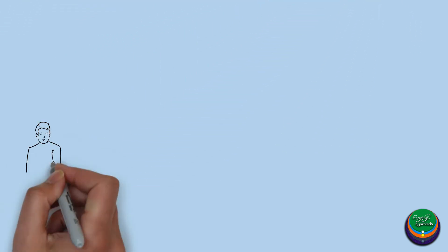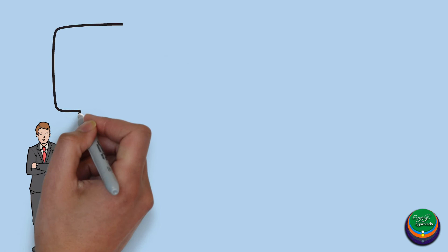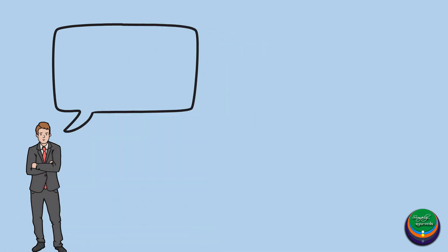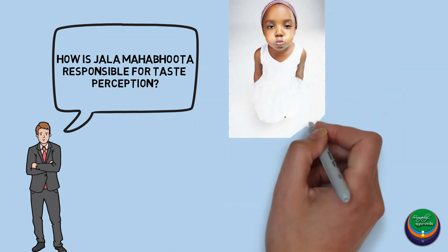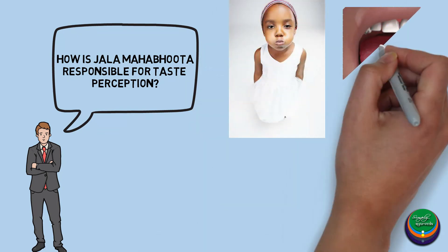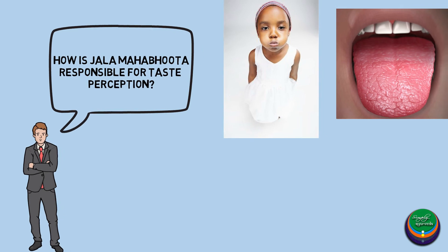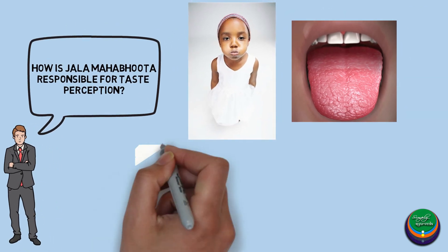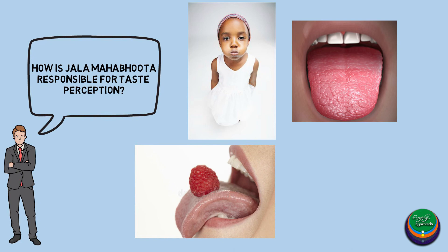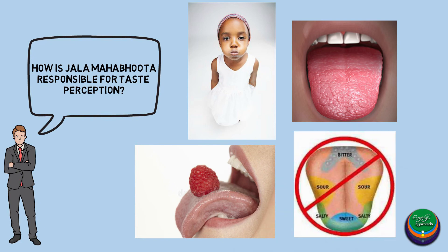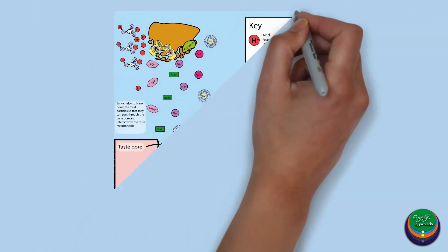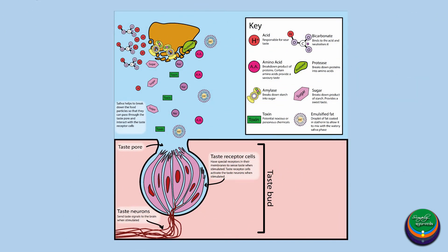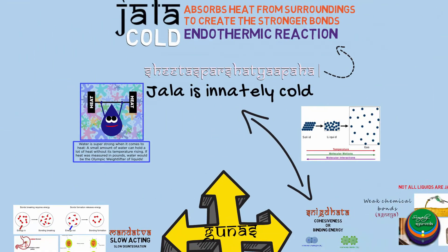Jala bhūta is responsible for rasana, or gustatory sense. Let us analyse this with a simple experiment. Try to blow dry your mouth — temporarily, the oral cavity loses its predominance of Jala tattva. Now place a piece of food on your tongue. Are you able to taste the food as you usually do? No. This is because Jala tattva is required to bind the molecules present in the food to the receptors of rasanendriya, which is responsible for the perception of taste.